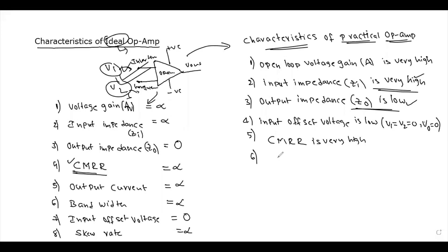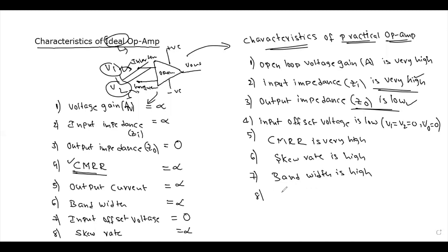CMRR is very high. Next: slew rate is high. Bandwidth is also high. Next: input offset current is low, because voltage is low and current is low — since I equals V by R relationship. Input offset current is also low. Next: input bias current is also low.